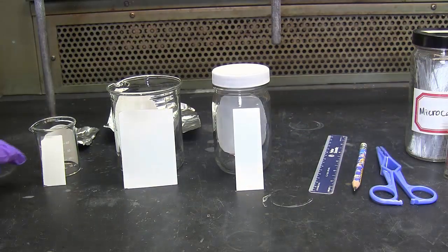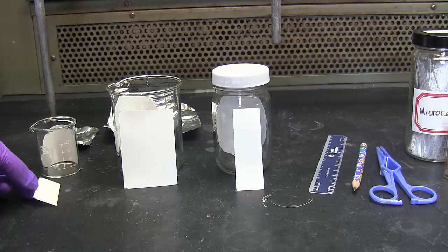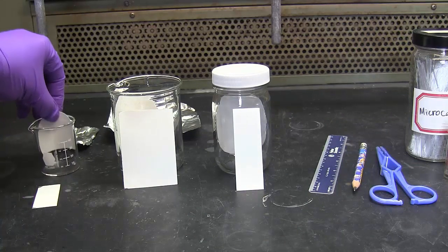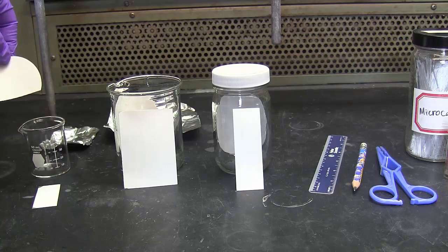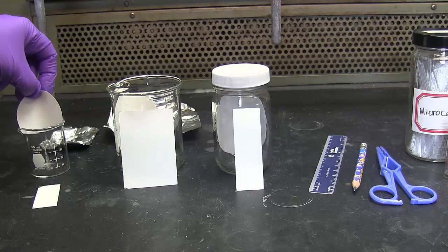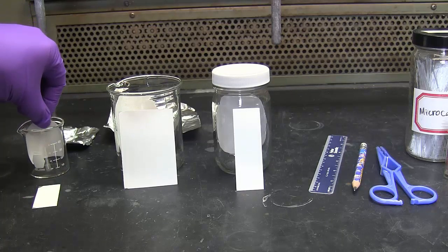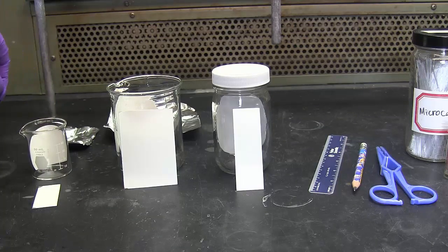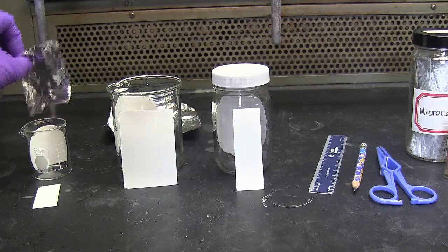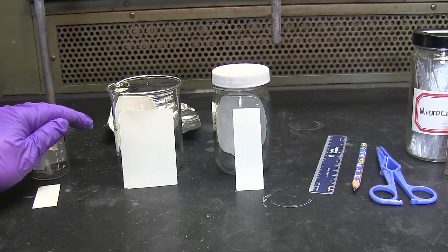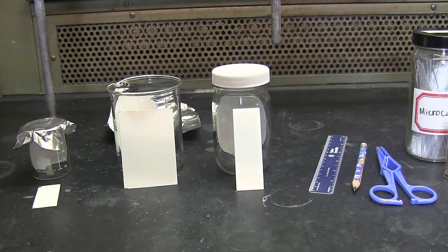To develop the TLC developing chamber, you'll need to have a piece of filter paper. You can cut one side and slide it down into the jar or beaker. Then you can cap it with aluminum foil, a watch glass, or if you have a jar, use the jar cap.